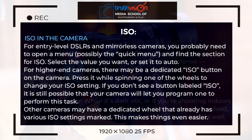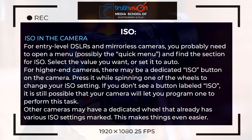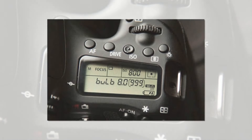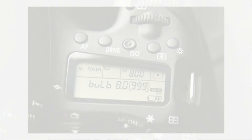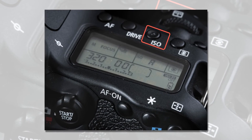For many entry-level DSLRs, ISO can be found in different places on different cameras. For the cheaper entry-level cameras, you may need to open the menu — some label it as the quick menu — and find the section clearly labeled ISO, then select the value you want. Some cameras also allow you to enable ISO Auto, which is useful when you are learning. Higher-end cameras like the 7D and 5D Mark IV have a dedicated ISO button at the back or top of the camera.